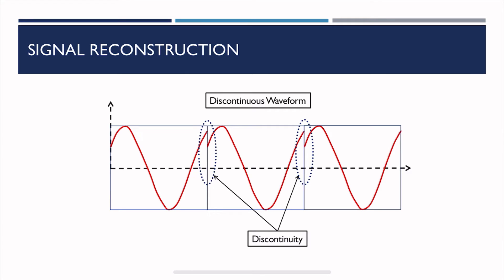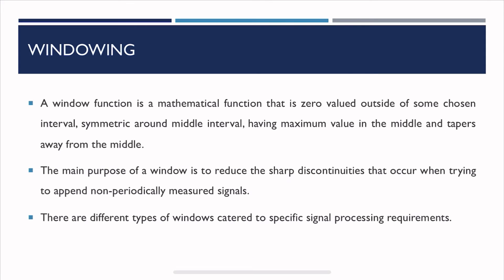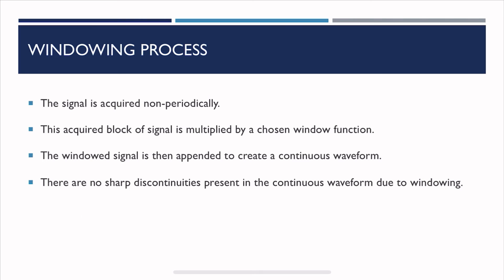So you see a signal like this with discontinuities — we need to remove those discontinuities, and that is accomplished by windowing. A window function is a mathematical function that is zero-valued outside of some chosen interval, symmetric around the middle interval, having maximum value in the middle and tapering away from the middle. The main purpose of the window is to reduce those sharp discontinuities that arise by appending the signal one after the other. So the purpose of windowing is that when you apply it to a signal, you can almost get rid of those discontinuities. There are different types of windows suited to different specific signal processing requirements. We will discuss those in another video, but here I'll explain what this windowing process is all about. So first the signal is acquired non-periodically, and then the block of signal is multiplied by a chosen window. After this process, you append the signals one after the other, you get this continuous waveform which is infinitely long, and there are no discontinuities present in the signal — the reason being windowing.